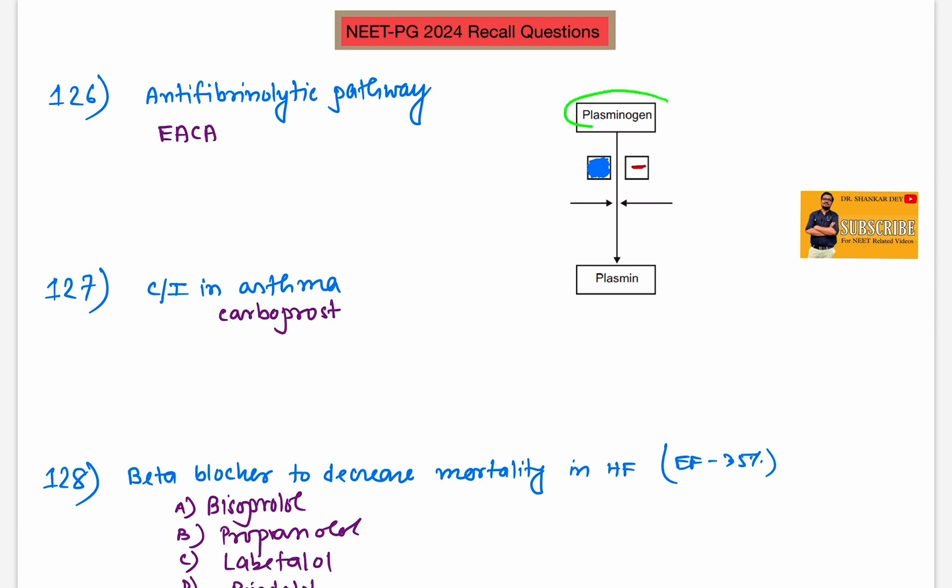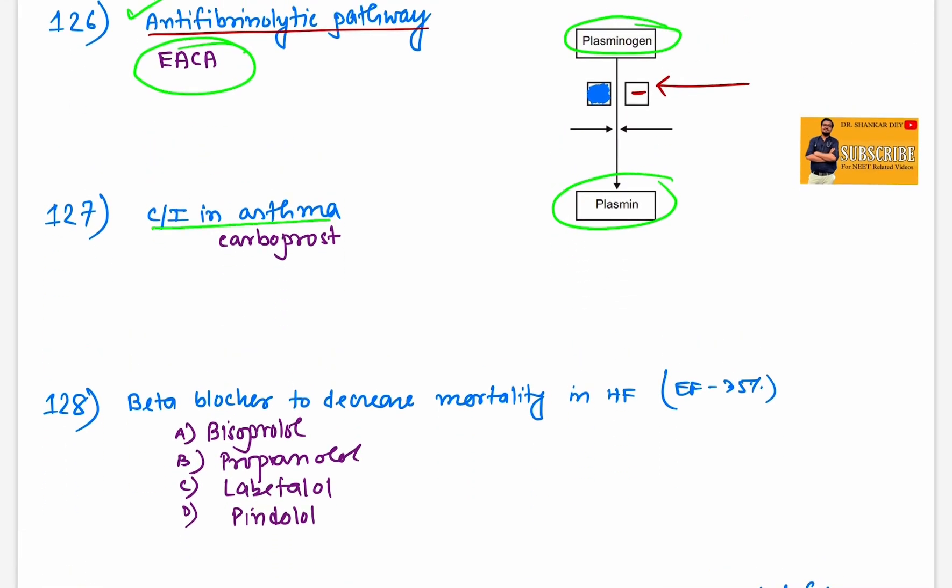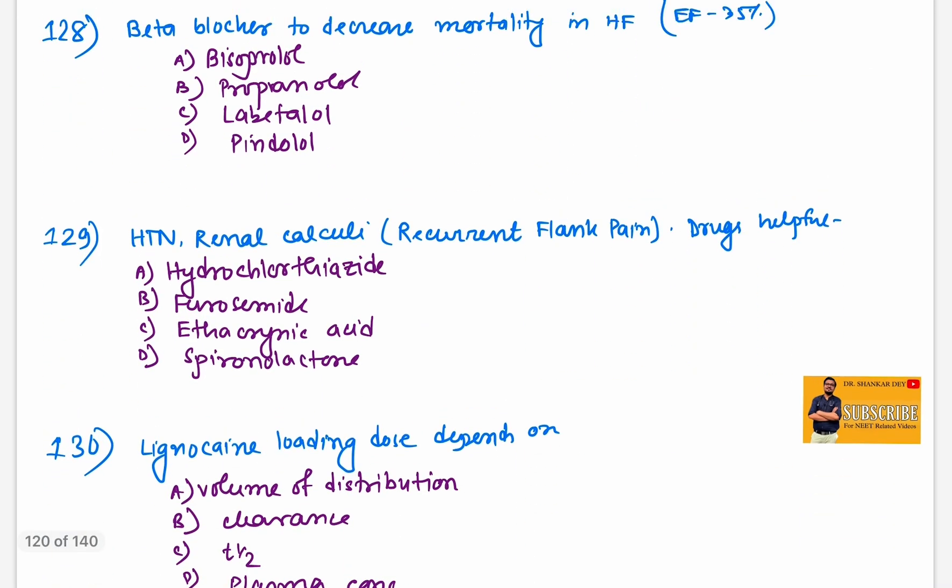They asked which is the drug that inhibits this pathway. So if this is antifibrinolytic pathway that was asked, answer will be tranexamic acid. Question 127: Contraindicated in asthma is carboprost. Carboprost is contraindicated in asthma.